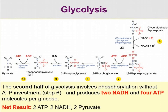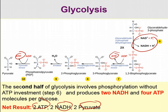In the second half of glycolysis, we take the two 3-carbon molecules and produce two NADHs — high-energy electron carriers — and four ATP. Since we put two ATP in and got four out, the net result is two ATP, two NADH, and two pyruvate. Pyruvate is the 3-carbon end product of glycolysis. You get two pyruvates because your original glucose was a 6-carbon molecule that has been split into two 3-carbon pyruvates.